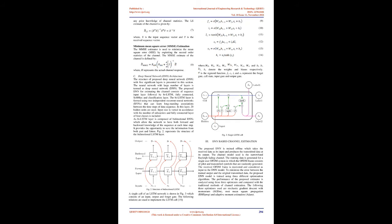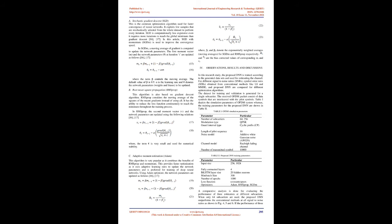C. Deep Neural Network (DNN) Architecture. The structure of the proposed deep neural network (DNN) with five significant layers is presented in this section. The neural network with large number of layers is termed as deep neural network. The proposed DNN for estimating the channel consists of sequence input layer followed by Bi-LSTM, fully connected, softmax, and classification layer. The Bi-LSTM layer is formed using two independent recurrent neural networks (RNNs) that can learn long-standing associations between the time steps of data sequence. In this layer, 20 hidden units are used. Input size is varied in accordance with the number of sub-carriers, and fully connected layer of four classes is included. As Bi-LSTM layer is composed of bi-directional RNNs which allow the network to have both forward and backward knowledge of the sequence at each time step, it provides the opportunity to save the information from both past and future.